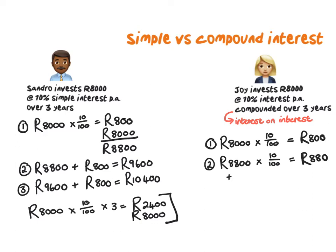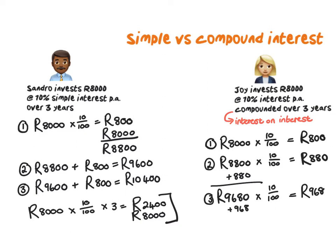She gets 10% on 8,800, which is not 800 Rand but 880 Rand. Adding that on, she now has 9,680 Rand. Then she gets 10% on this amount, so her interest is 968 Rand, giving her 10,648 Rand — which is more than 10,400 Rand. So compound interest yields a bigger result than simple interest over the same period.